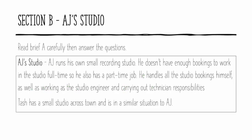Now we're going to look at section B and AJ's studio. There is a brief that you'll have to read, and then you answer questions based on it. The brief: AJ runs his own small recording studio. He doesn't have enough bookings to work full time, so he also has a part time job. He handles all the studio bookings himself, as well as working as the studio engineer and carrying out technician responsibilities. Tash has a small studio across town and is in a similar situation to AJ.